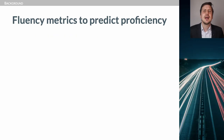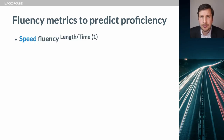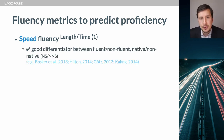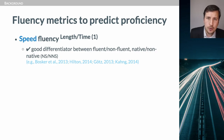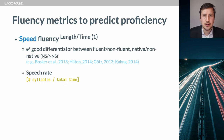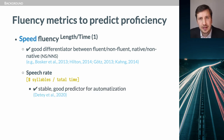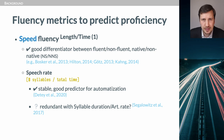What fluency metrics are good predictors of proficiency? First, speed fluency, which is the composite of length and time metrics. It has been demonstrated in many studies that speed fluency metrics are good differentiators between fluent and non-fluent speakers, between native and non-native. The best known metric is probably speech rate — the number of syllables over the total time — confirmed to be particularly stable and precise, making it a good predictor for automatization.